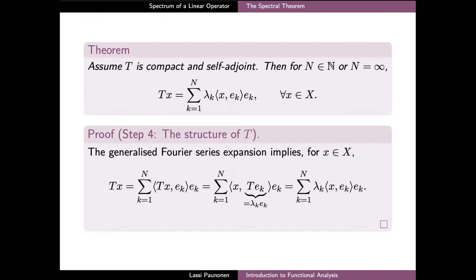The generalized Fourier series expansion of elements in the range of T allows us to complete the proof by showing that Tx has exactly the claimed form. If we take an arbitrary x, then Tx — being in the range of T — can be written using the Fourier series expansion. We then modify the inner products in the coefficients by using the self-adjointness of T to move the operator T to the second component of the inner product. Since e_k is an eigenvector of T, Te_k equals λ_k times e_k, and we take the real eigenvalue λ_k out of the inner product, arriving at exactly the expression for Tx that we were looking for.